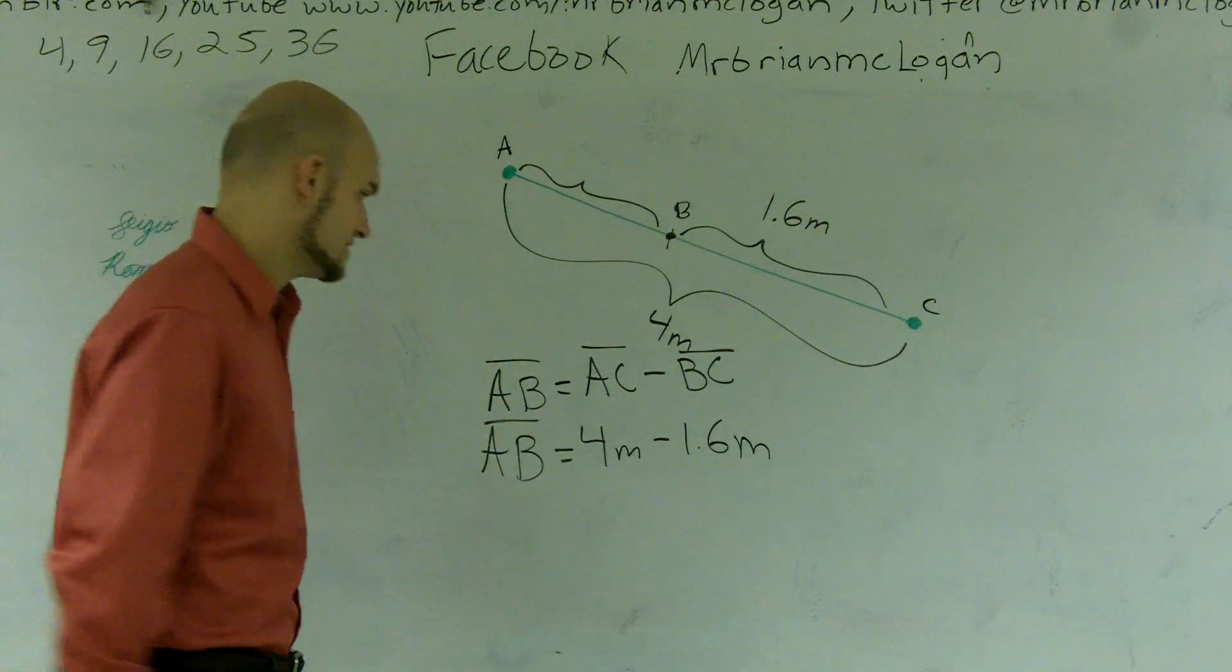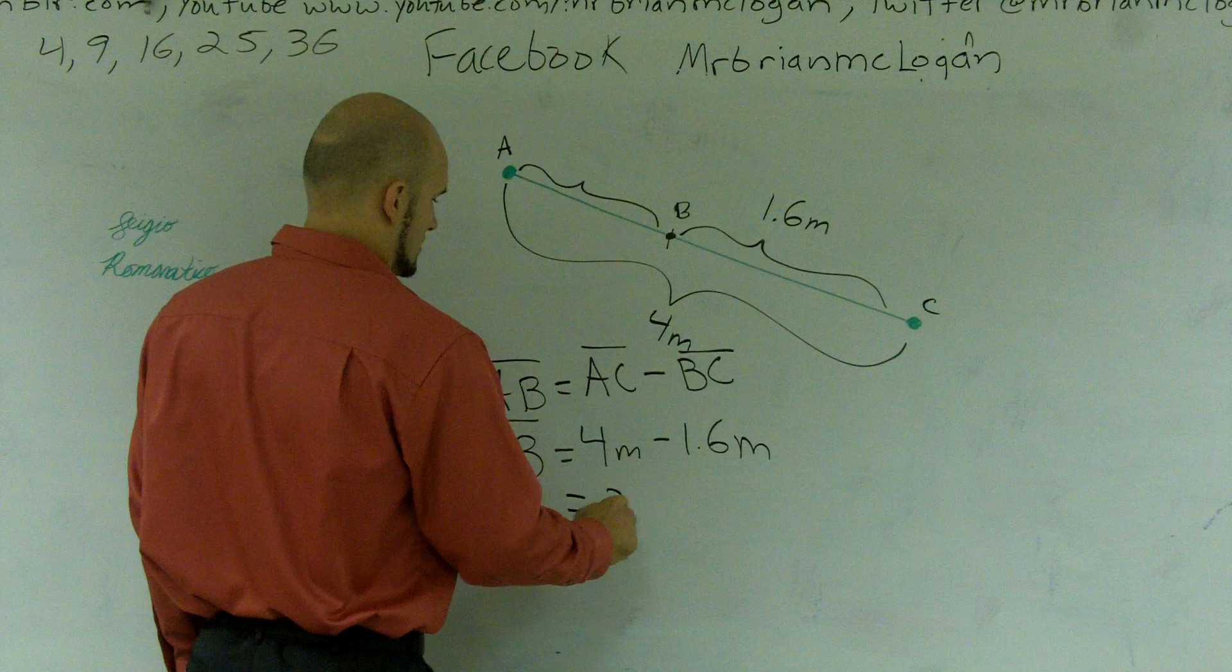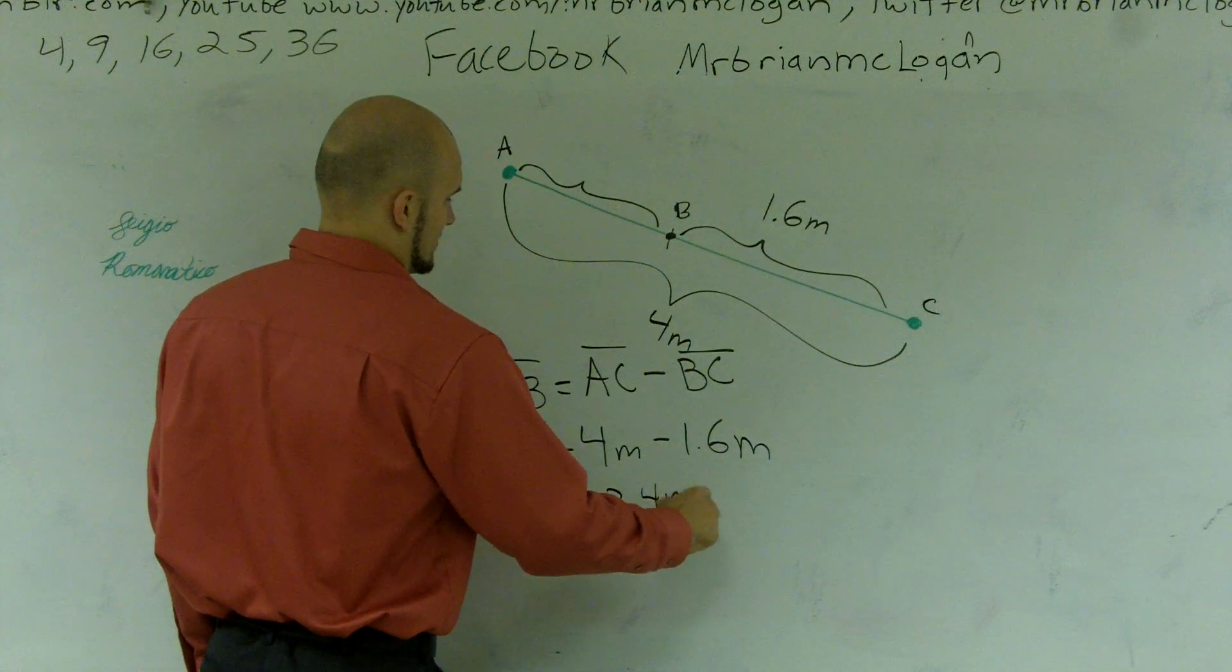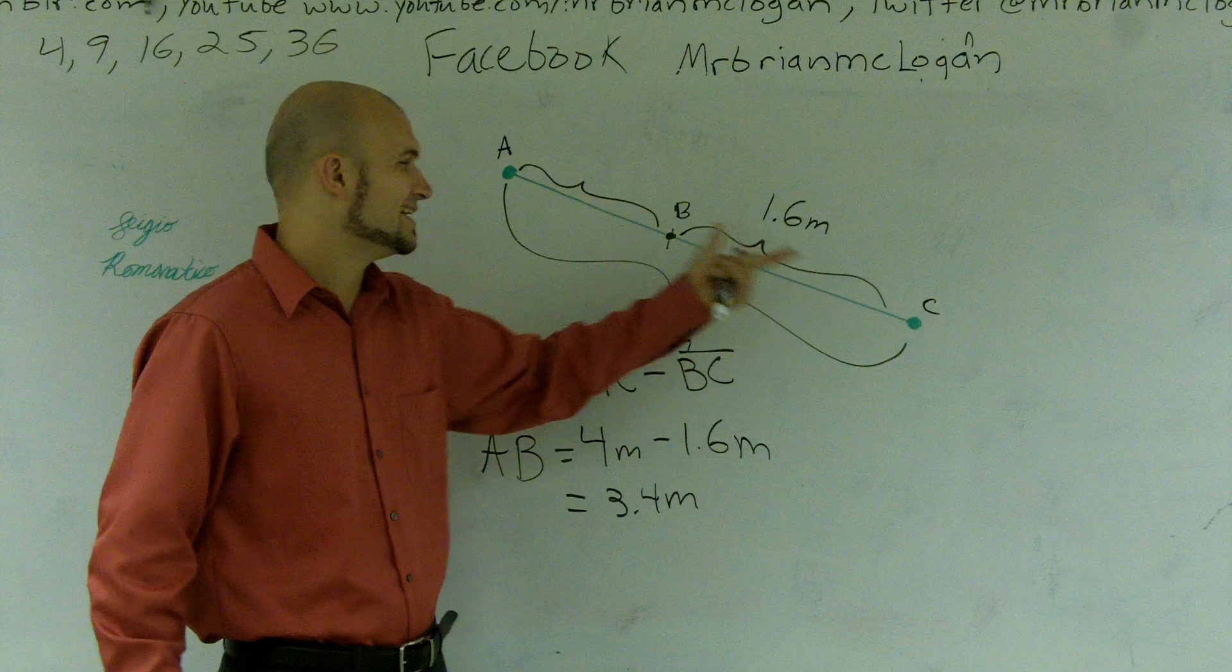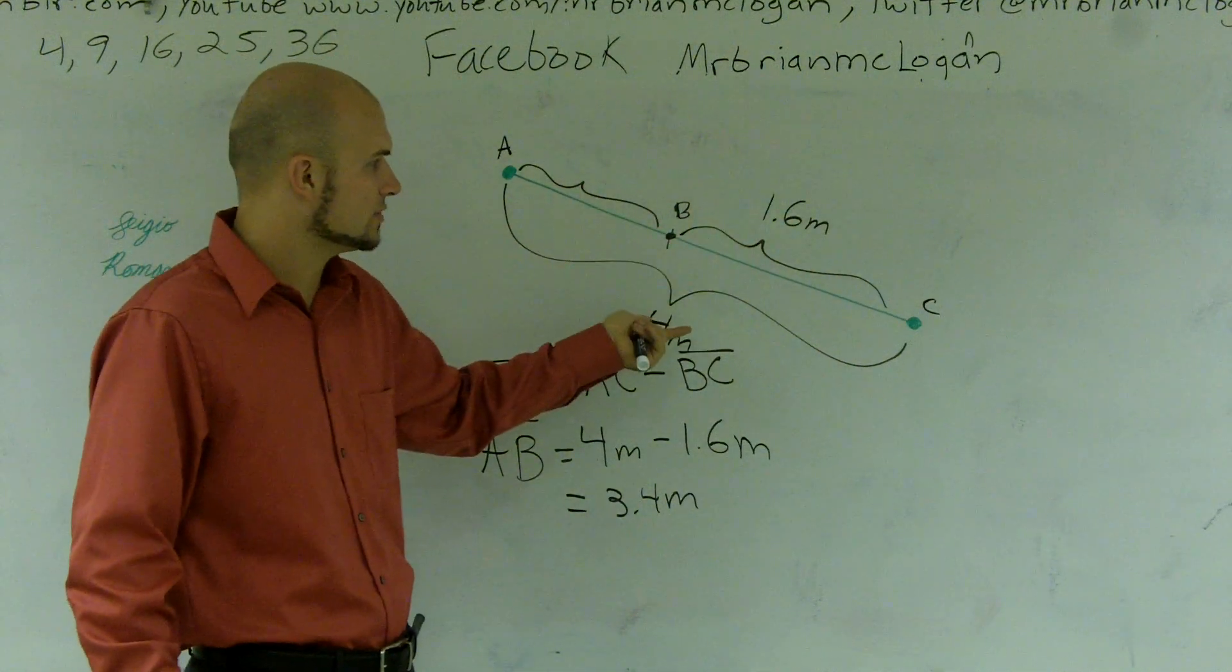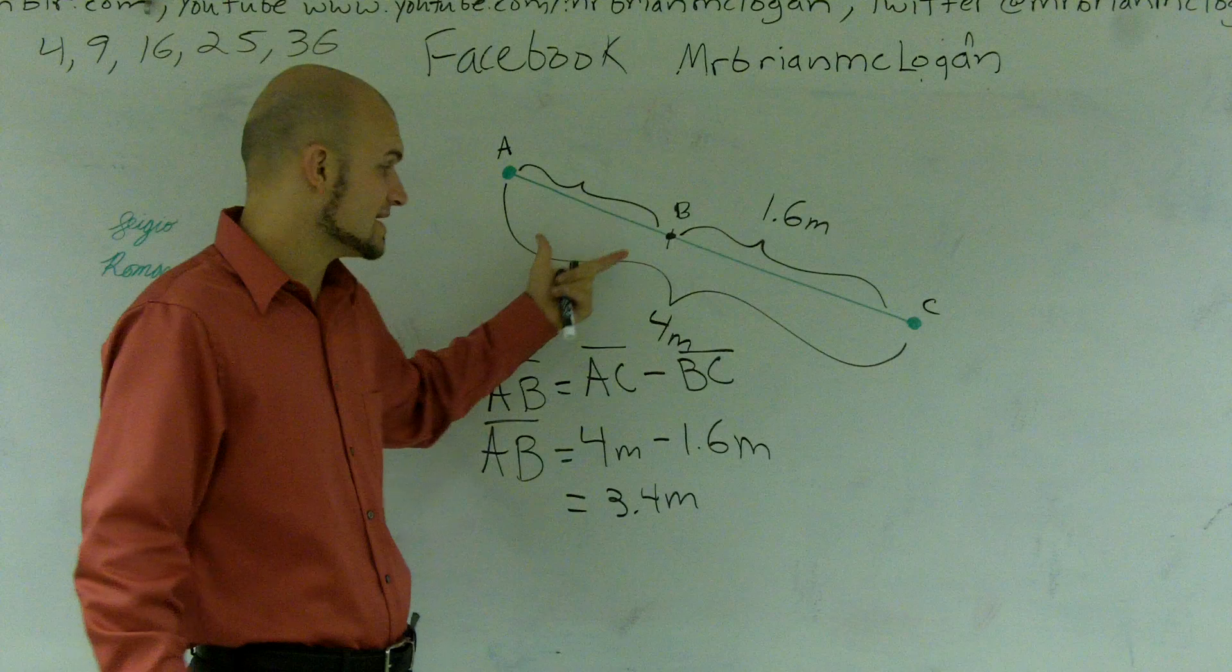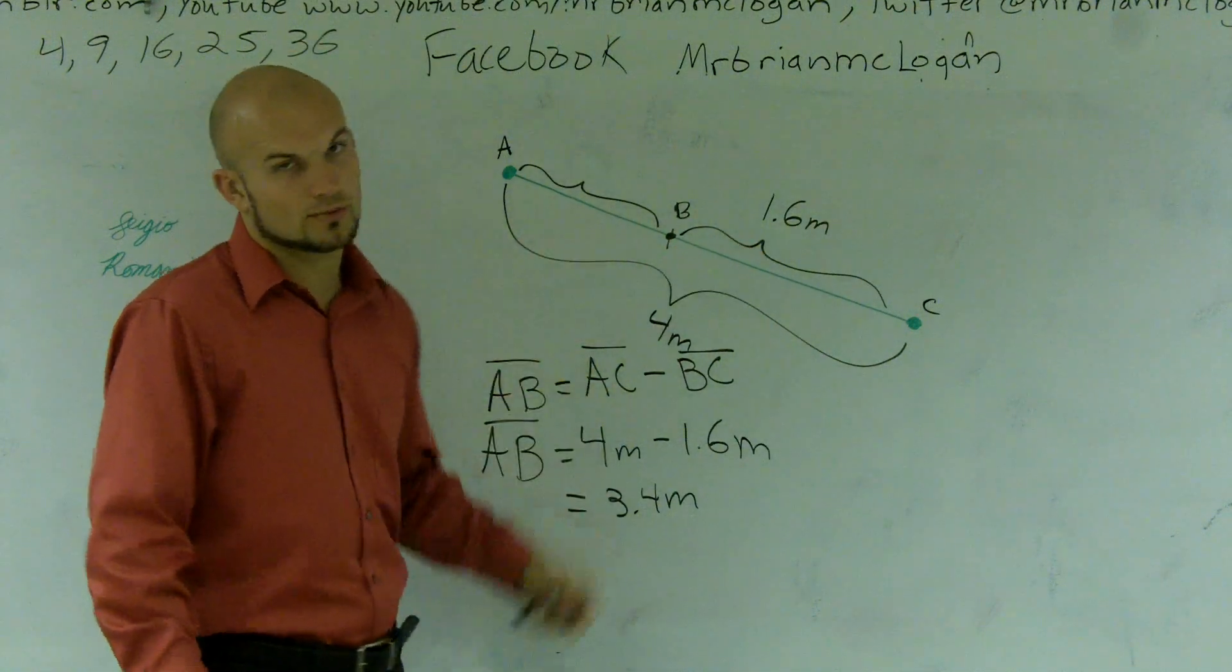Therefore, 4 minus 1.6 is going to give me 3.4 meters. So just remember when you have a whole and then a part, and you're trying to find that other part, and they both make up when added together, they're going to make up the whole. Like it's shown in this line segment, you can just take the whole, subtract your part to get your other part.